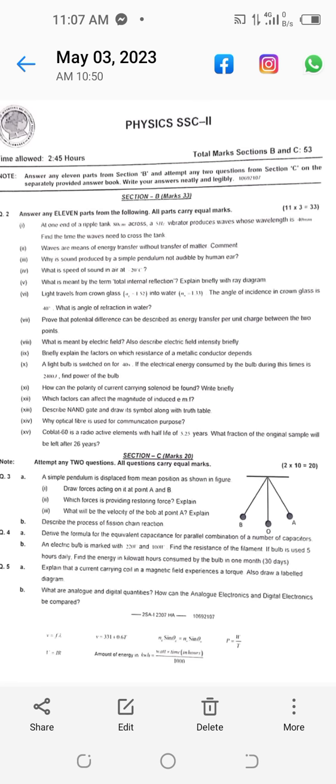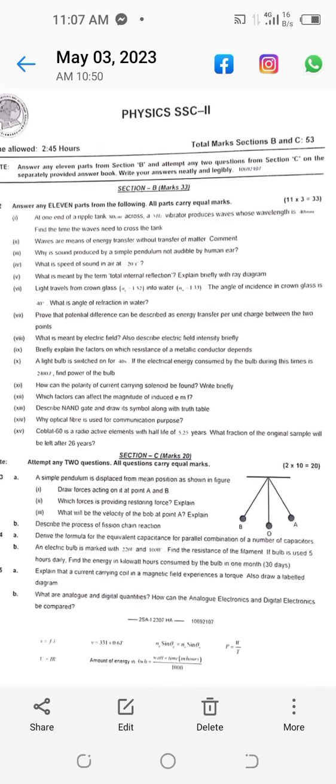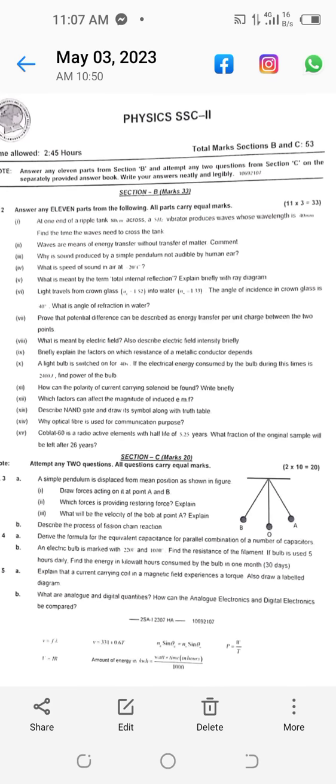Cobalt-60 is a radioactive element with half-life of 5.25 years. What fraction of the original sample will be left after 26 years? Now Section C, question number 3, part A: A simple pendulum is displaced from mean position as shown in figure.